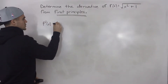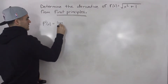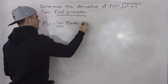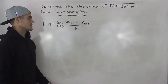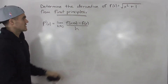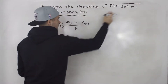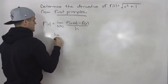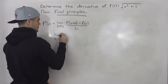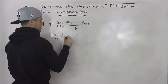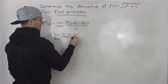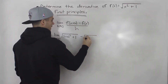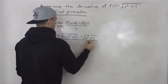We know the derivative of a function, as we went over in the lecture videos, is the limit as h goes to zero of f of x plus h minus f of x, all over h. For the f of x plus h expression, we just plug in x plus h for x. So we can rewrite this as the limit as h goes to zero — f of x plus h is the square root of x plus h squared plus one, minus f of x which is the square root of x squared plus one, all over h.